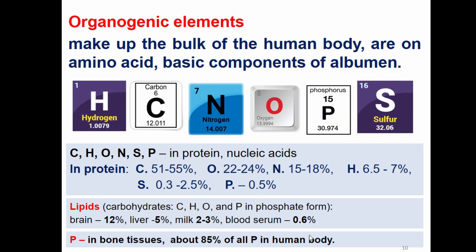Then we have another class of elements called organogenic elements. These six elements are: carbon, hydrogen, nitrogen, oxygen, phosphorus, and sulfur. Organogenic elements make up the bulk of the human body. They are part of amino acids, lipids, and carbohydrates. You find these elements in protein and nucleic acids. In protein: up to 55% carbon, up to 24% oxygen, up to 18% nitrogen, up to 7% hydrogen, sulfur up to 2.5%, and phosphorus up to 0.5%. Lipids contain these elements as well, along with carbohydrates and phosphorus in phosphate form.